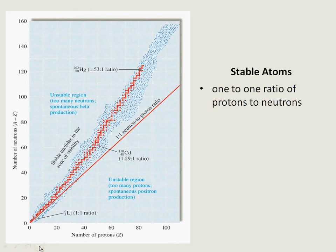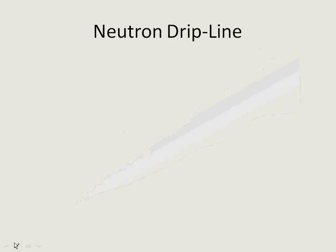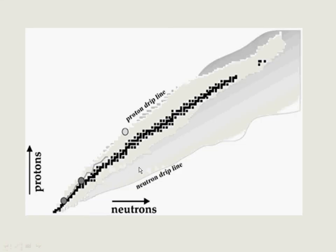Stable atoms have a one-to-one ratio of protons to neutrons. Here's another depiction where protons are on the vertical and neutrons are on the horizontal. Here's our zone of stability. This drip line — the proton drip line and the neutron drip line — shows how far a particular element will go with isotopes: how many neutrons can you add and have that isotope exist? This is some research being done at Michigan State University at a cyclotron there.